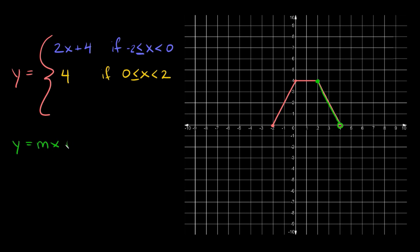The slope here, remember, is the rise over the run. The rise in this case would be in the negative direction — we have to go down two spaces and then over one. So the slope would be negative two over one.